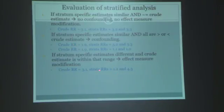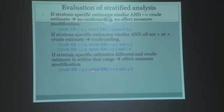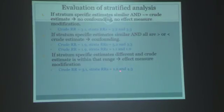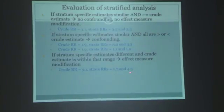Effect measure modification means there are two different effects. The crude—which is the average—is not representing the true effect very well. The crude gives you 3.1, but the true effect in one subgroup is only 1.2, and in another it is 4.3. The effect is modified; this is heterogeneity of effect.